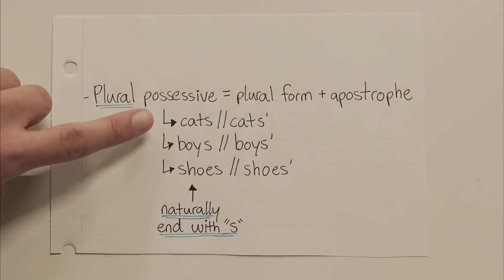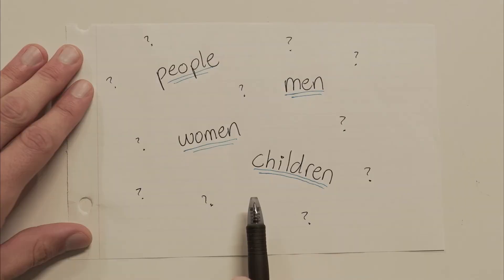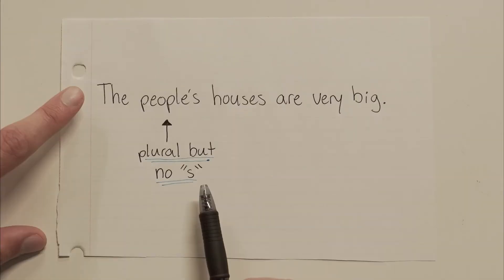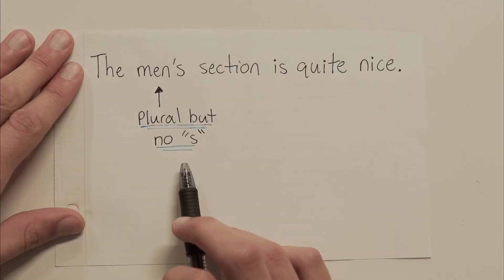Cats becomes cats'. Boys becomes boys'. Shoes becomes shoes'. But if you have a plural word that does not end with s and you want to make it possessive, you're actually going to use the singular rule and add apostrophe s. So let's go to the example I said earlier: the people's houses are very big. Notice, people is plural, but it doesn't end with an s like most other plural words, so we can't just add an apostrophe at the end. Instead, we've got to do apostrophe s. How about this — the men's section is quite nice. Again, men is plural, but it doesn't end with an s, so we can't just add an apostrophe at the end. We've got to do apostrophe s.